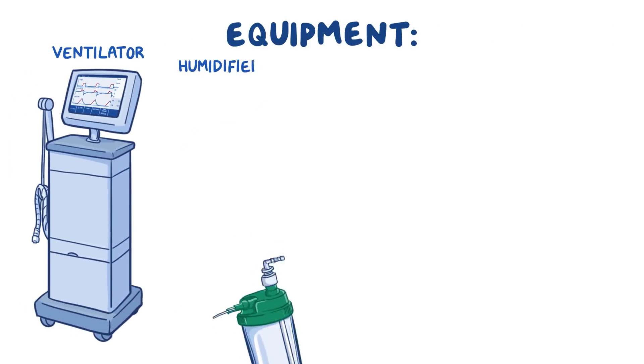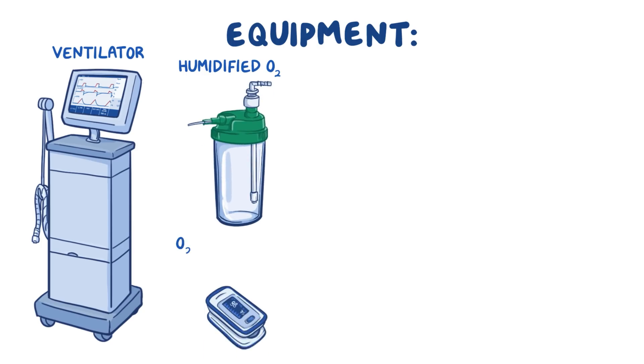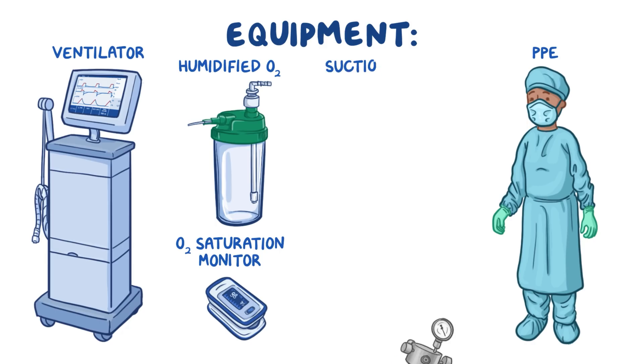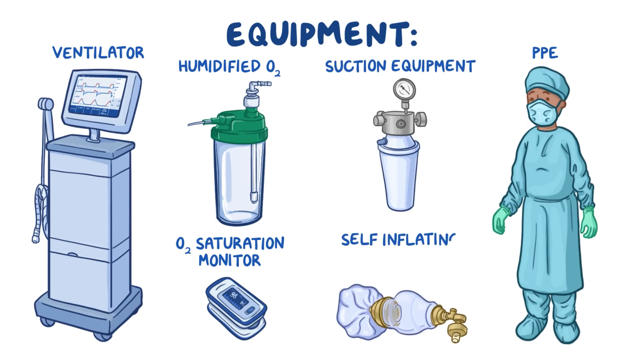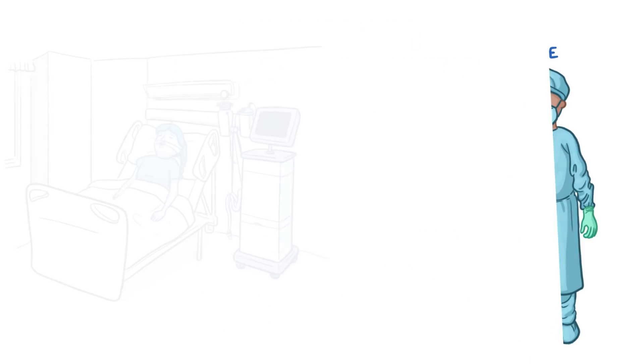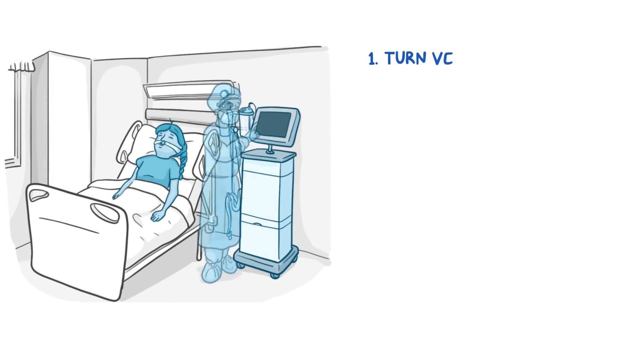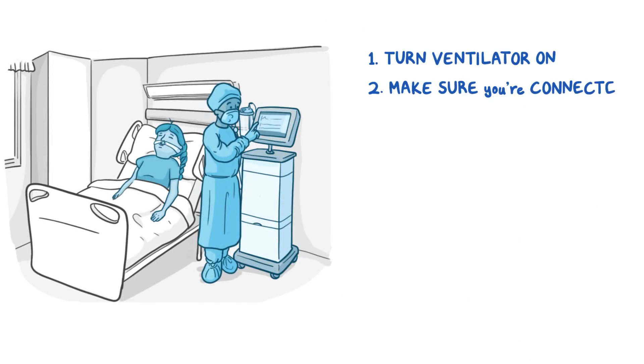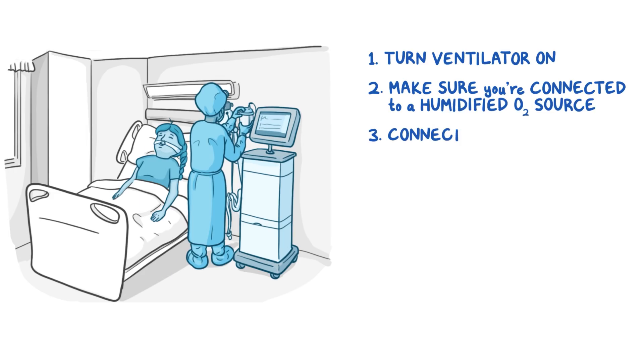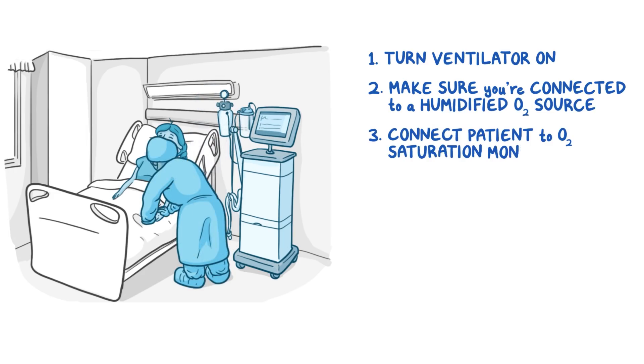Here's all the equipment you'll need: a ventilator, humidified oxygen source, an oxygen saturation monitor, personal protective equipment, suction equipment, and a self-inflating bag. To set up your patient, turn your ventilator on and make sure you are connected to a humidified oxygen source. Then connect your patient to an oxygen saturation monitor.